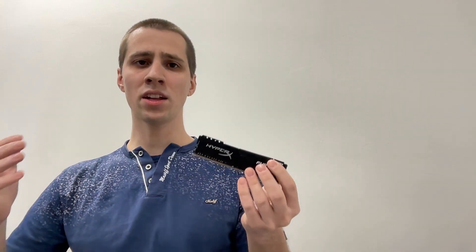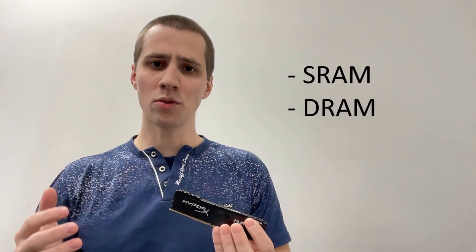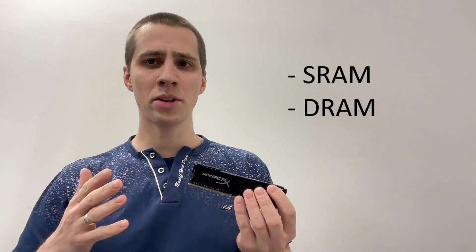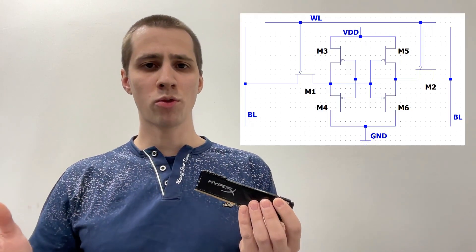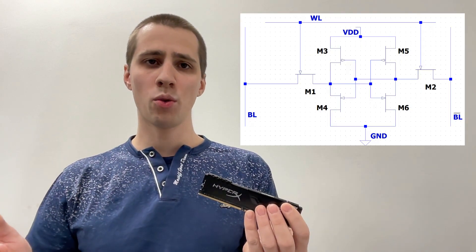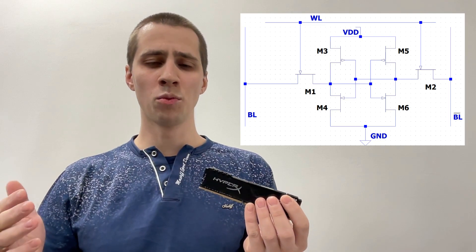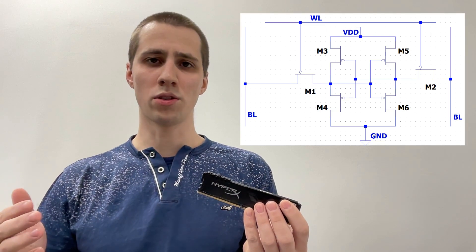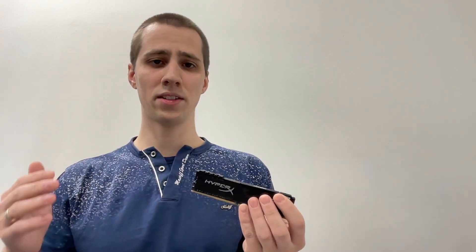By the technology used to realize it, RAM is divided into two types: Static RAM and Dynamic RAM. Static RAM is made from flip-flops which consist of multiple transistors. It is very fast but also expensive to produce.